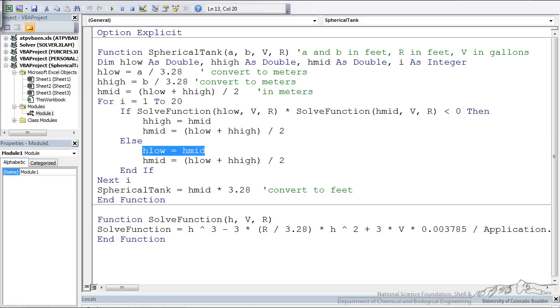We recalculate a new H mid. Otherwise, H low is the new mid. And then we can keep going. And you see I have 20 iterations. We end that with a next I. I've also dimmed I up here as an integer.